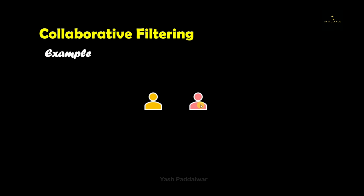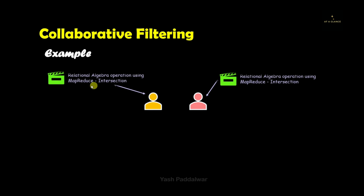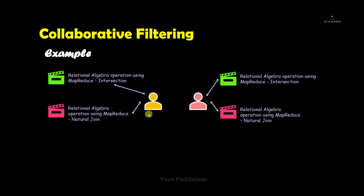Let's say we have two users, user 1 and user 2. Consider a scenario where both user 1 and user 2 watch the same video — relational algebra operation using MapReduce, with the operation being intersection. Both users also watch one more same video, which is relational algebra operation using MapReduce with the operation natural join. As per the historical data, both users have so far seen the same videos.